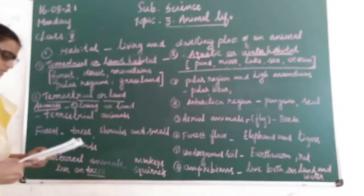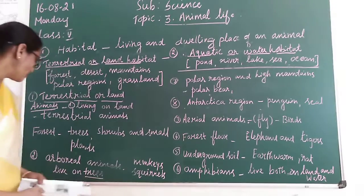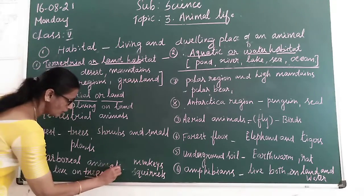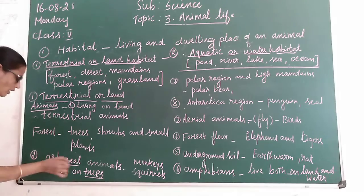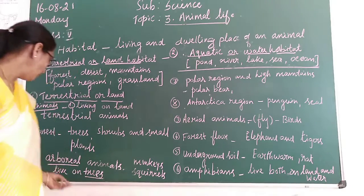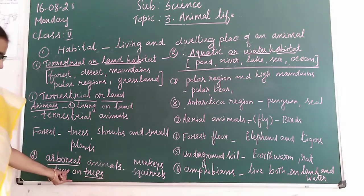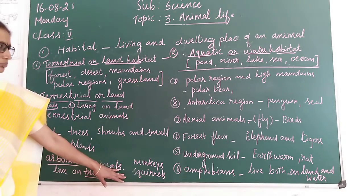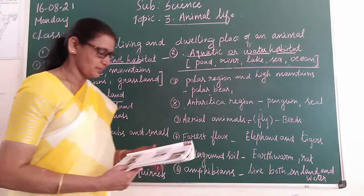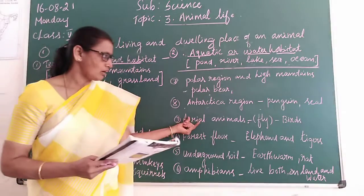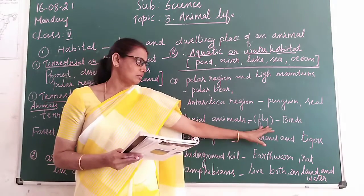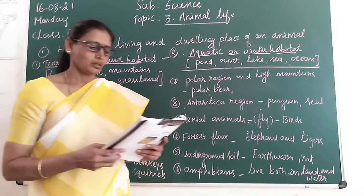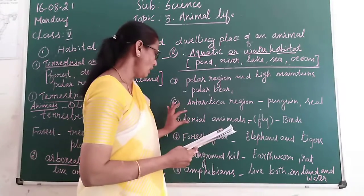Animals of various kinds are found here. The animals that live on trees are called arboreal animals. Examples: monkeys and squirrels. The second type is aerial animals — animals that fly are called aerial animals. Birds fly, so animals which fly are called aerial animals.